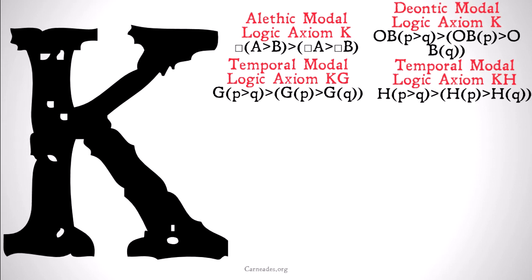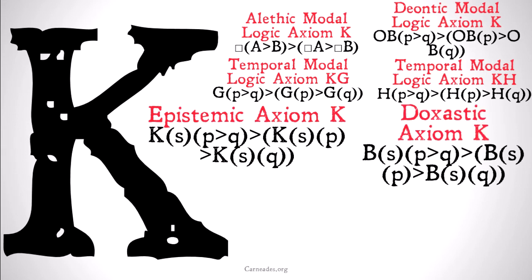Hopefully that makes sense. So it should be pretty clear what axiom K is going to look like for both knowledge and belief, but we'll state it clearly here. Epistemic axiom K: S knows that (P implies Q) implies that (S knows that P implies S knows that Q). And the doxastic axiom K: S believes that (P implies Q) implies that (S believes that P implies S believes that Q).